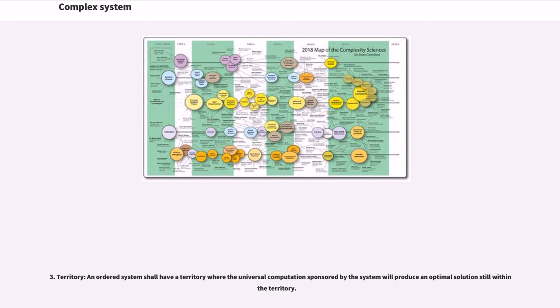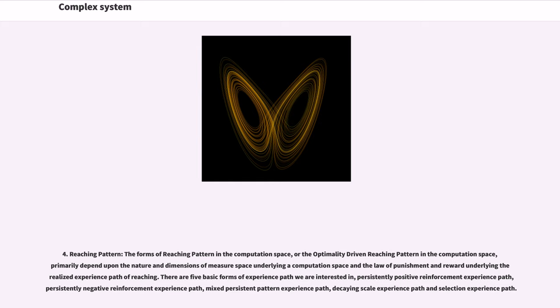3. Territory: an ordered system shall have a territory where the universal computation sponsored by the system will produce an optimal solution still within the territory. 4. Reaching pattern: the forms of reaching pattern in the computation space, or the optimality-driven reaching pattern in the computation space, primarily depend upon the nature and dimensions of measure space underlying a computation space and the law of punishment and reward underlying the realized experience path of reaching.